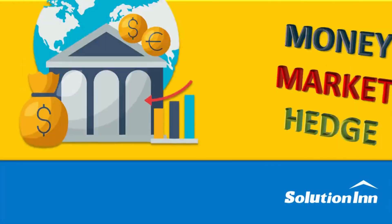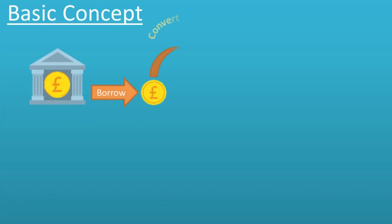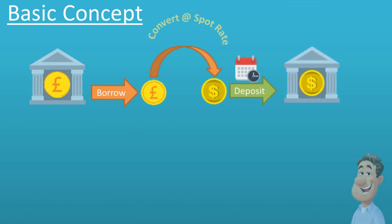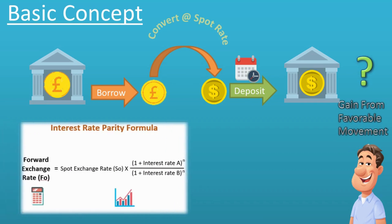Welcome to this video where we will learn about money market hedging. Money market hedging involves borrowing in one currency, converting the money borrowed into another currency, and putting the money on deposit until the transaction is completed, hoping to take advantage of favorable exchange rate movements. Because of the close relationship between forward exchange rates and interest rates in two currencies, it is possible to manufacture a forward rate by using the spot exchange rate and money market lending or borrowing.